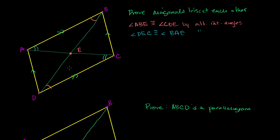Now we have something interesting. If we look at this top triangle and this bottom triangle, we have one set of corresponding angles that are congruent, and we have a side in between that's going to be congruent. We know — and we proved this in the previous video — that in parallelograms not only are opposite sides parallel, they are also congruent. So we know that side is equal to that side.